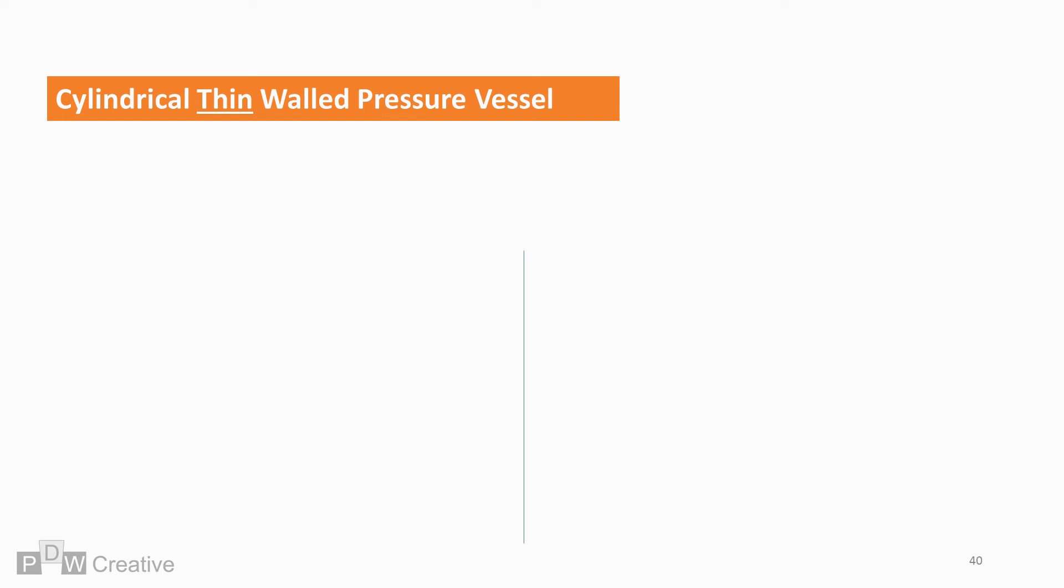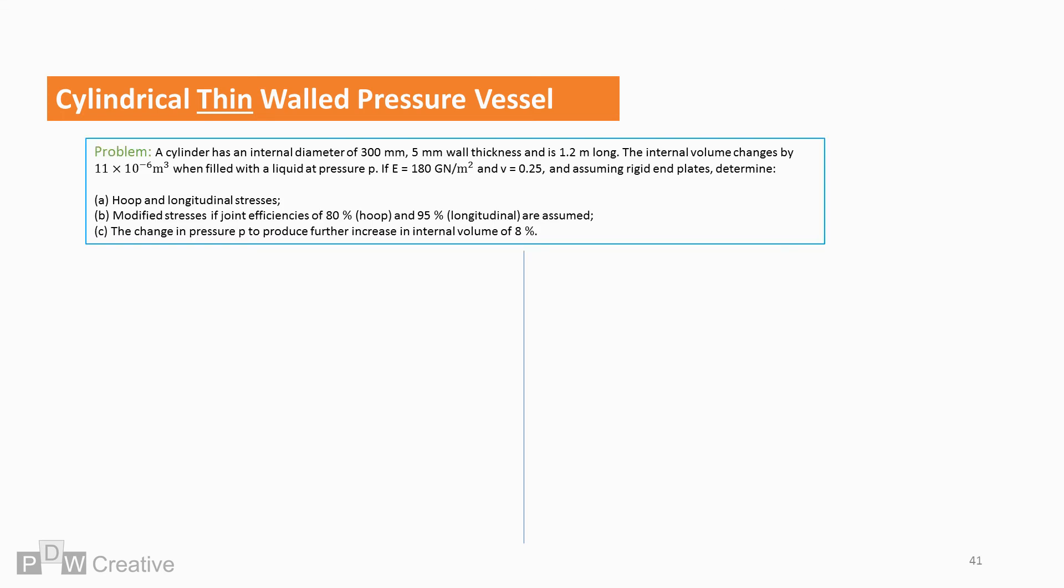Okay, so that's the theory. Let's have a look at putting the theory into a practical problem to finish. So a cylinder has an internal diameter of 300 millimetres, 5 millimetres wall thickness, and is 1.2 metres long. The internal volume changes by 11 times 10 to the power of minus 6 metres cubed when filled with a liquid at pressure P. If E equals 180 giga newtons per metre squared, and V equals 0.25,